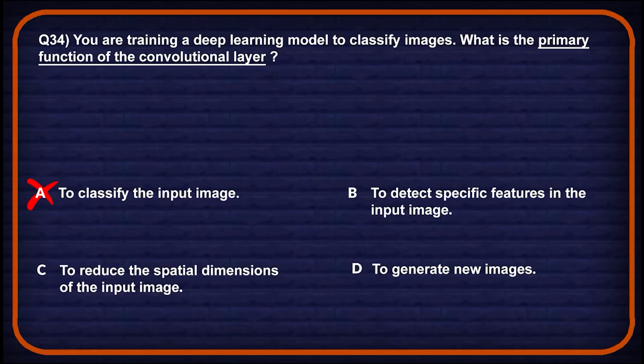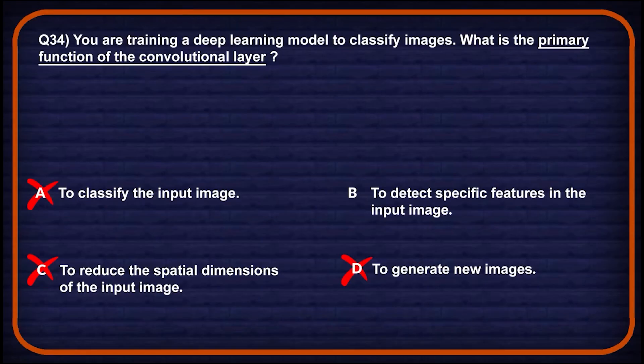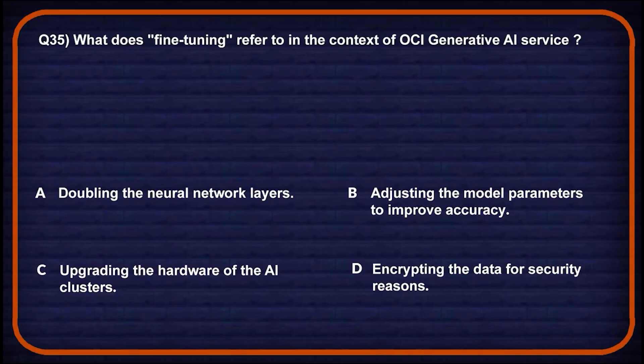Option C: to reduce the spatial dimensions of the input image — that's the goal of a pooling layer, not a convolutional layer, so wrong choice. Option D: to generate new images — image generation is handled by models like GANs, not standard CNNs, so wrong choice again. Option B will be the correct one.